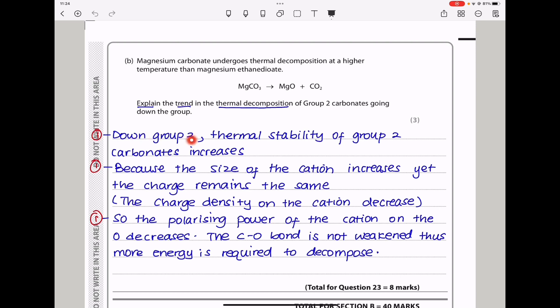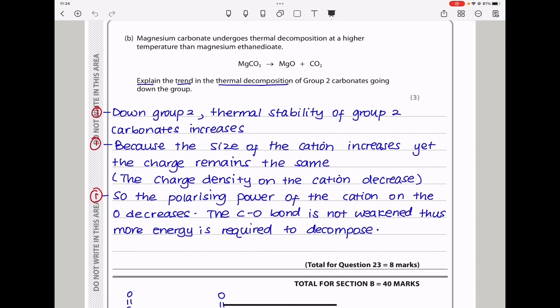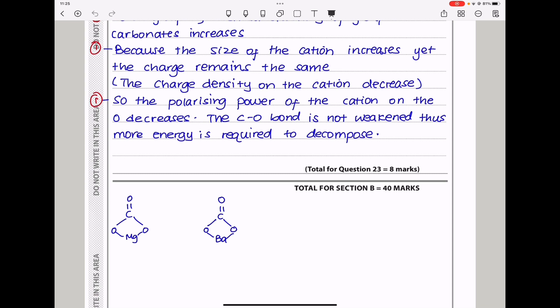So I said that on group 2, thermal stability of group 2 carbonates increases because the size of the cations increases, yet the charge remains the same. So we can say the charge density on the cation decreases. So the polarizing power of the cation on the oxygen decreases. The carbon oxygen bond is not weakened, thus more energy is required to decompose. My demonstration is here.